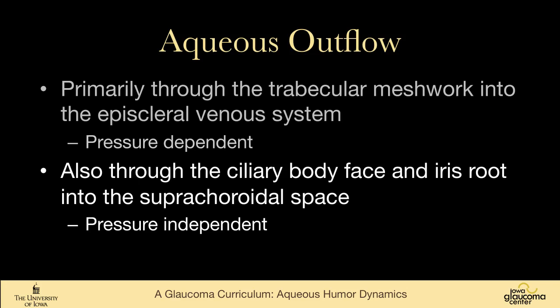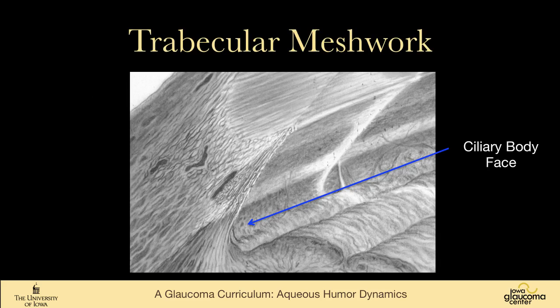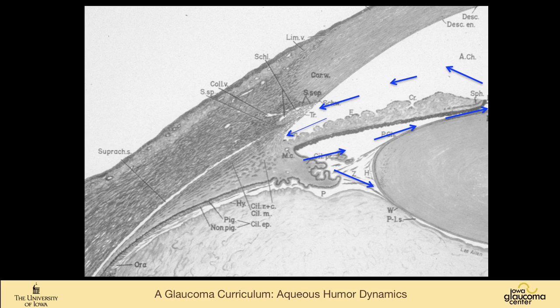The other route of egress is through the ciliary body face and the iris root into the suprachoroidal space, and this is pressure-independent. This is shown by the thin blue arrow into the face of the ciliary body into the suprachoroidal space. This is a small percentage of aqueous outflow — around 10%, although there are studies that suggest it may be higher than that.